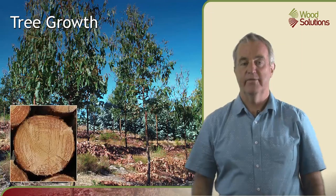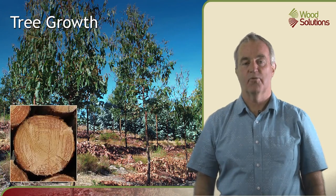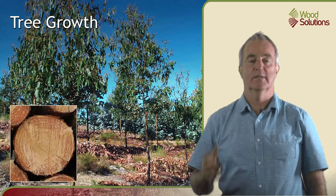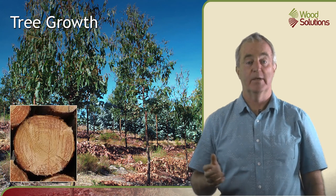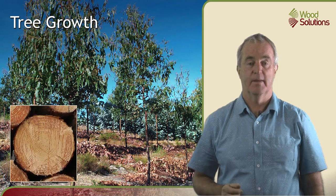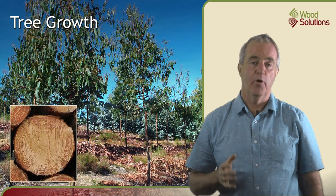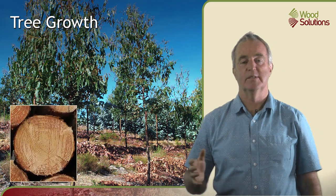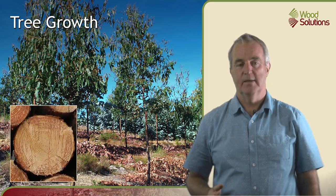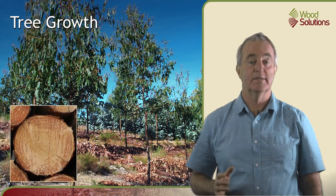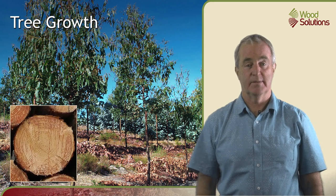Trees are living organisms that grow in response to their genetic characteristics, the local environmental conditions, and their age. To help it grow and survive, the tree produces different types of wood in its stem. These have varied roles in the tree and distinct properties.